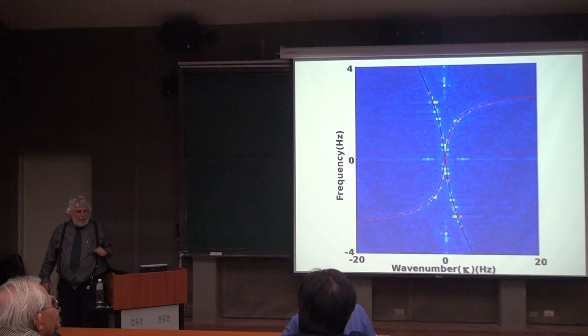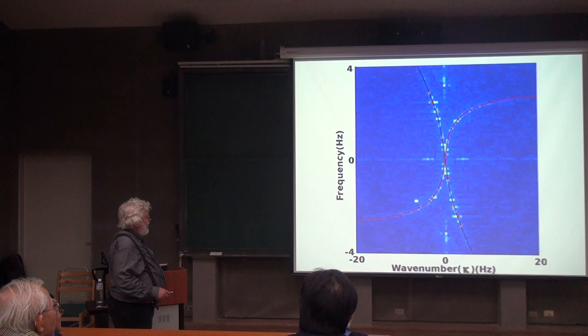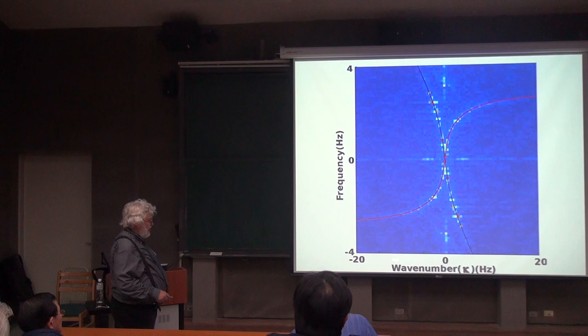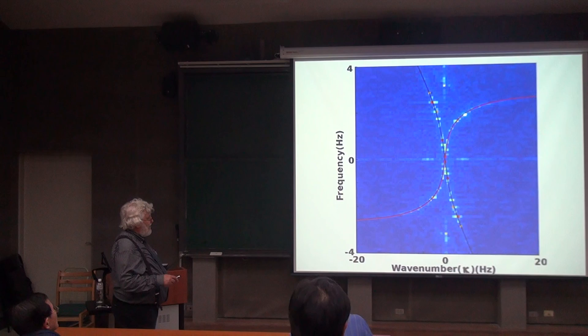This is an example of the dispersion relationship. This was a picture we took and then we Fourier transformed it in space and in time of just noise on the surface of the water. And we find that that noise has very definite relationship between the frequency and the wave number. This is the spatial wave number and this is the temporal frequency. There's this very definite relationship between the wave number and the frequency, which is just the dispersion relationship.